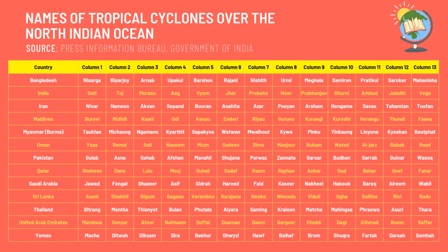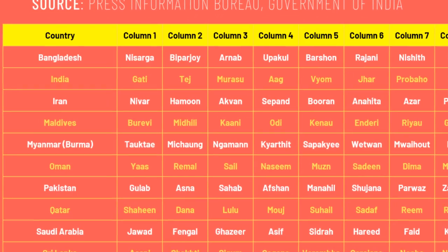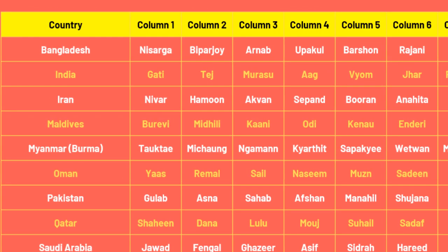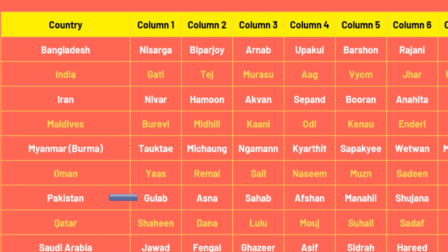Then using the same list as an order, the cyclones are being named. For example, cyclone Nivar, which recently had its landfall at the coastal areas of Tamil Nadu, is named after the nomination of Iran. As we expect the next cyclone again in the Bay of Bengal area in the first week of December, we already know the name of the cyclone in case it happens — this is the time for Maldives and the cyclone will be called Burabi. Taukte from Myanmar, Yas from Oman, and Gulab from Pakistan are the next three names after Burabi.